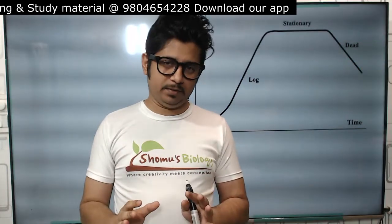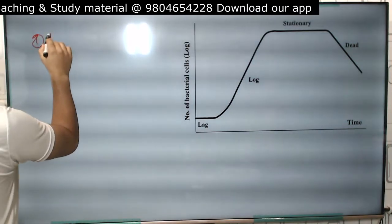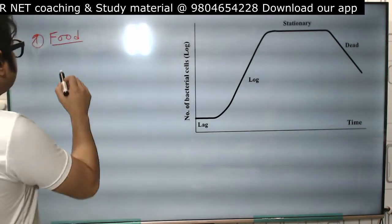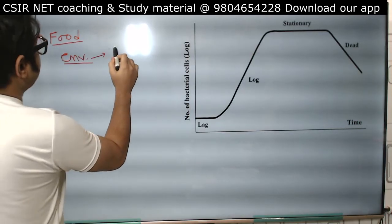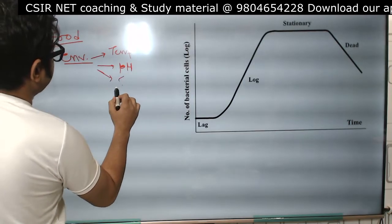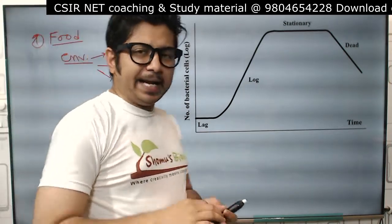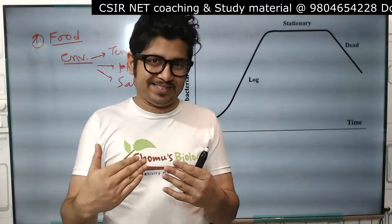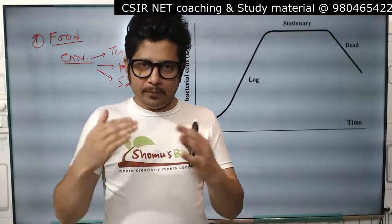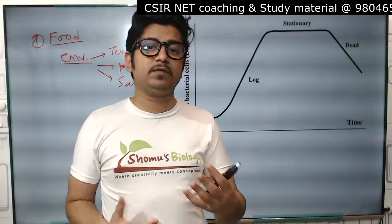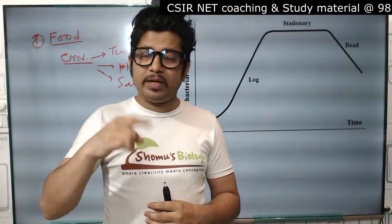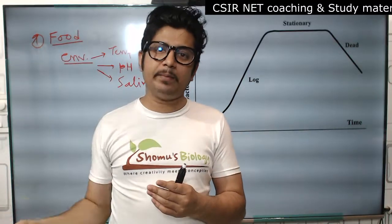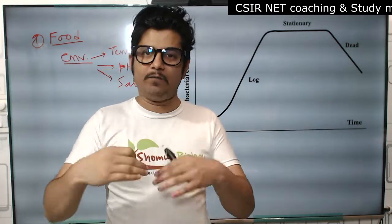Bacterial growth depends primarily on the food resource. But apart from food, there are other environmental factors that play an important role — temperature, pH, and salinity of the environment. As bacteria start to grow and the population becomes more dense, the toxic waste that bacteria release into the environment also increases. That toxic waste slows down further bacterial growth. So when discussing bacterial growth, you need to account for food, environmental parameters, and the density factor.